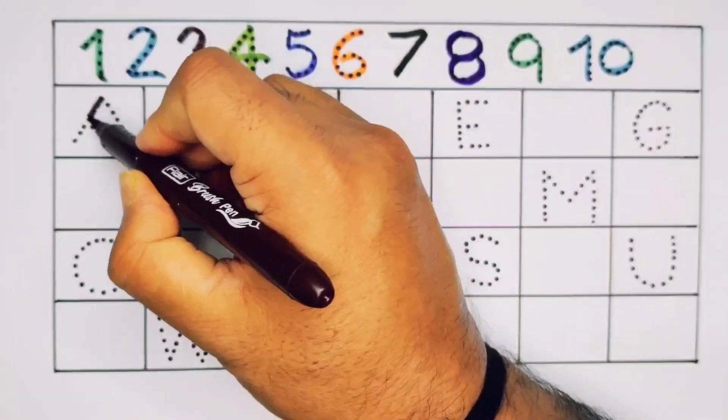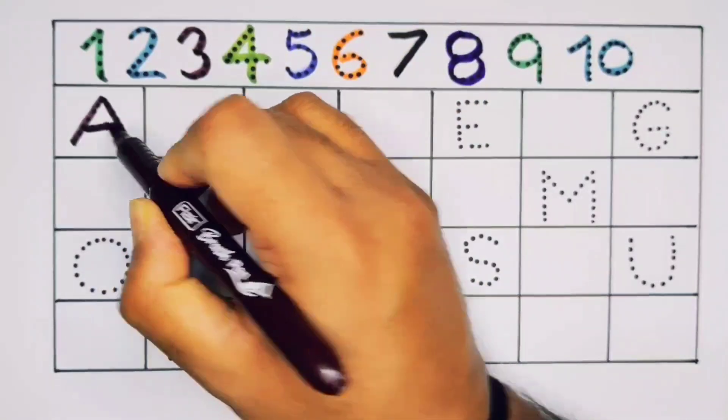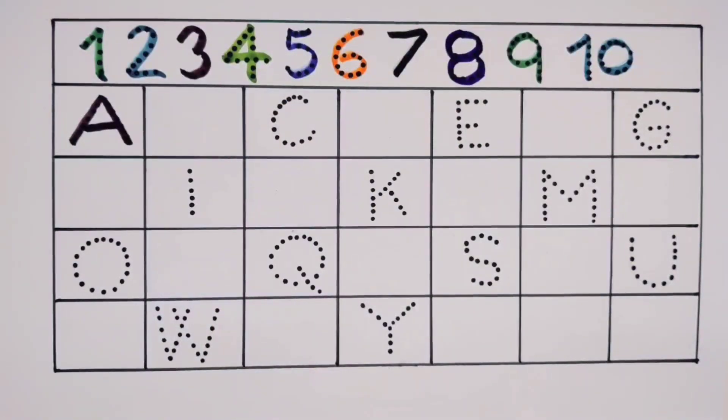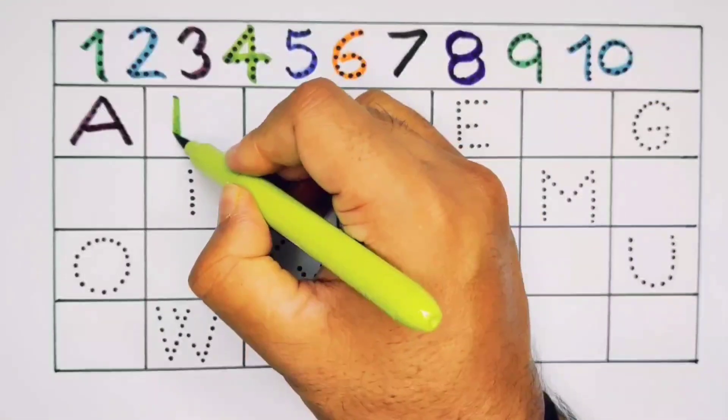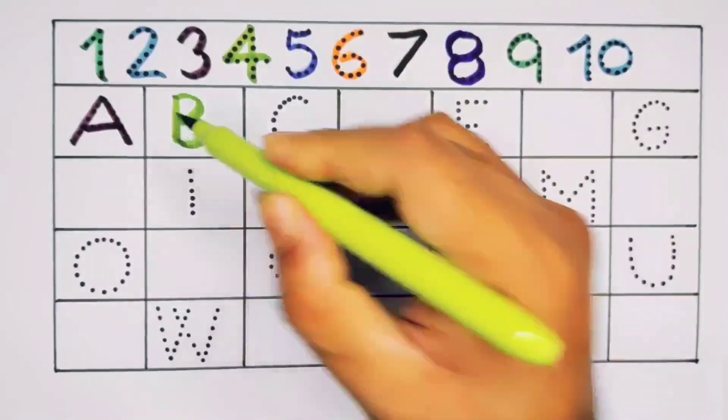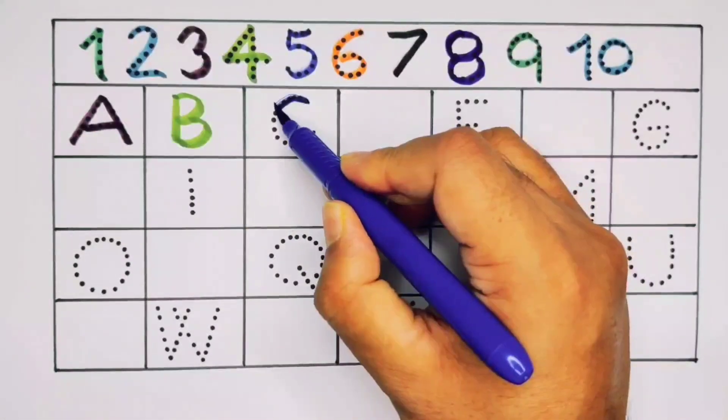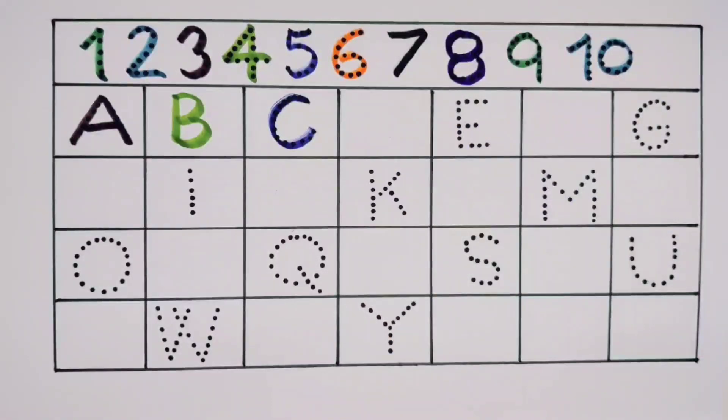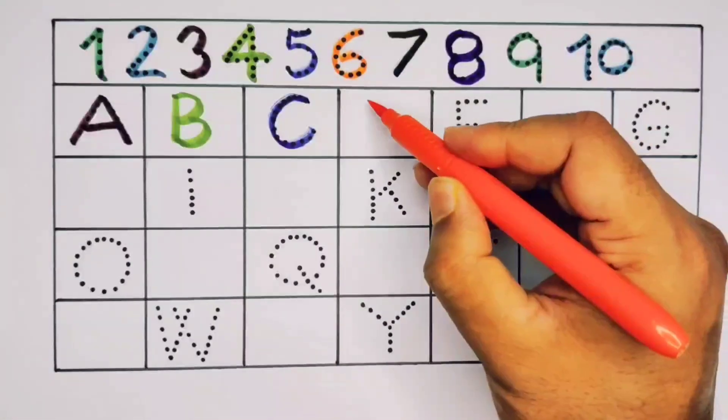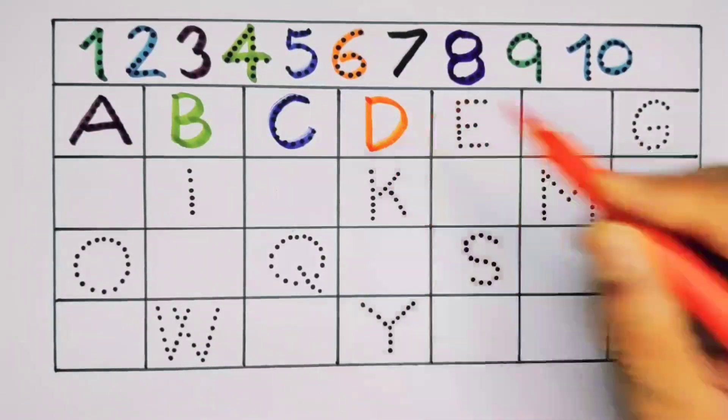A, A for ant. A for ant. What will next? It's B. B for bag. B for bag. Now C. C for car. C for car. What will next kids? This is D. D for drum. D for drum.